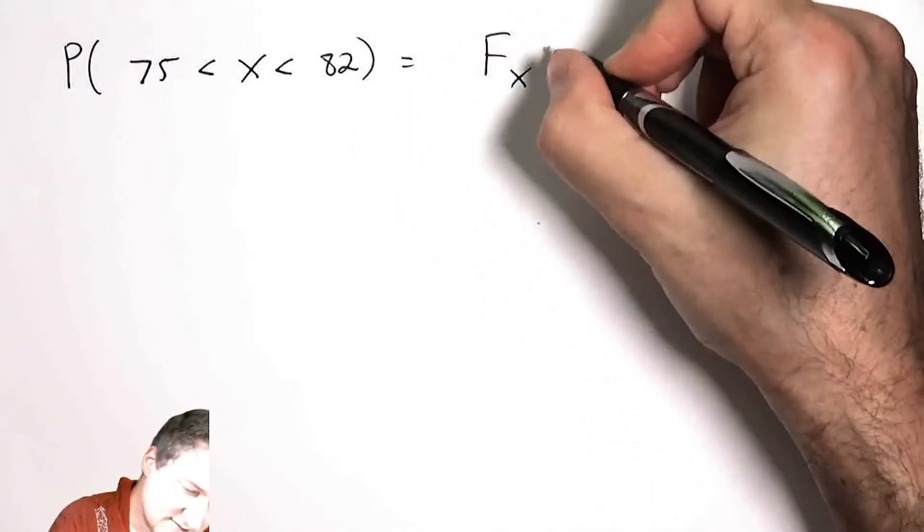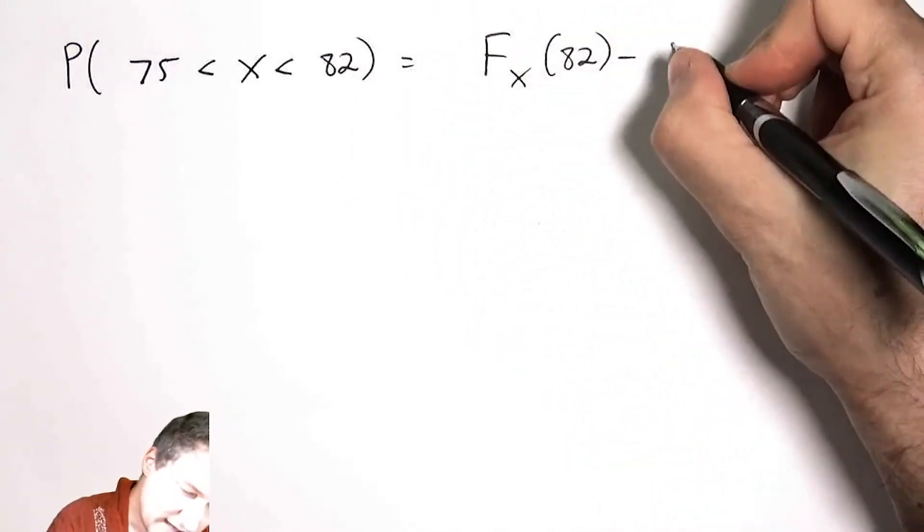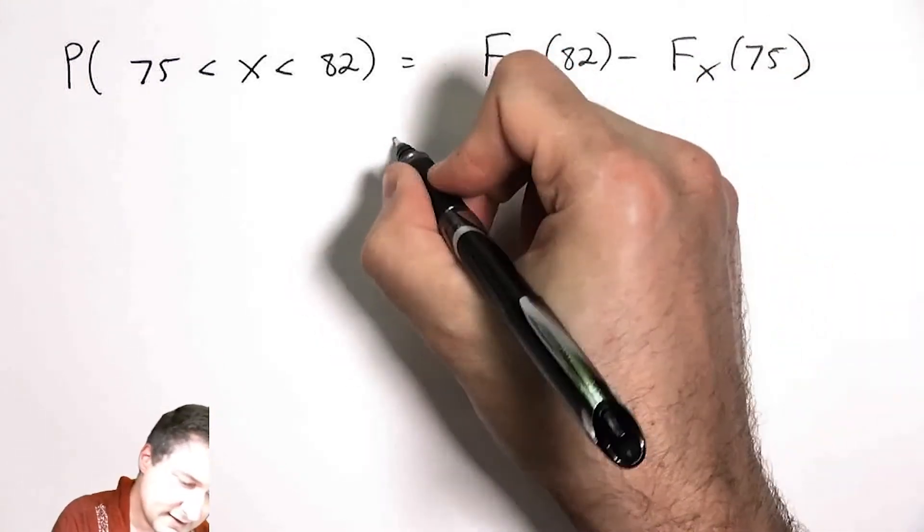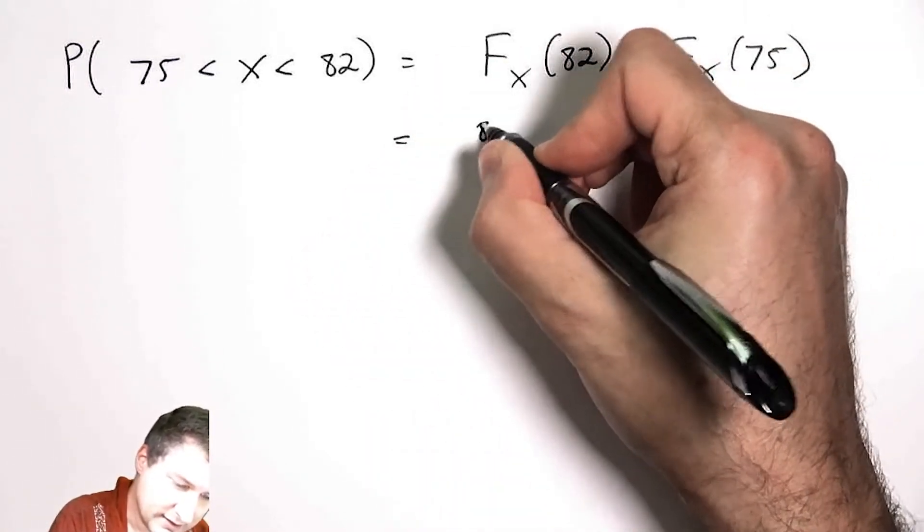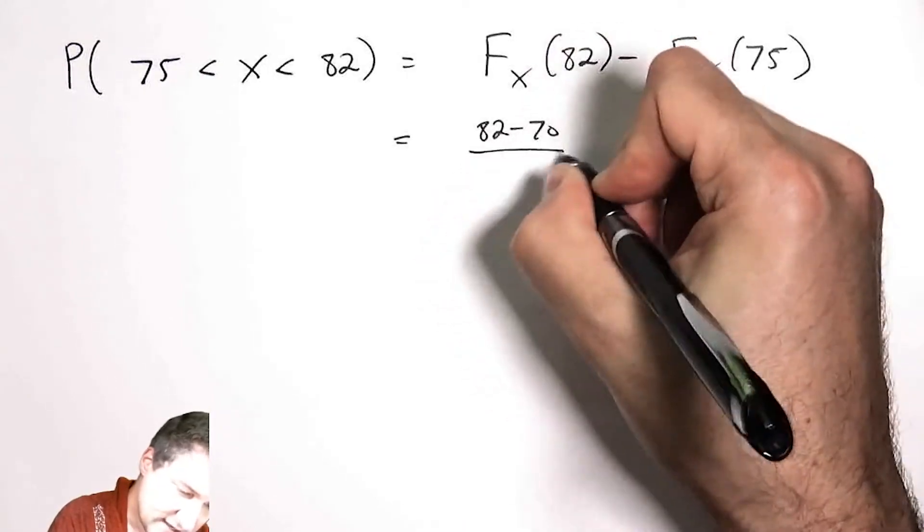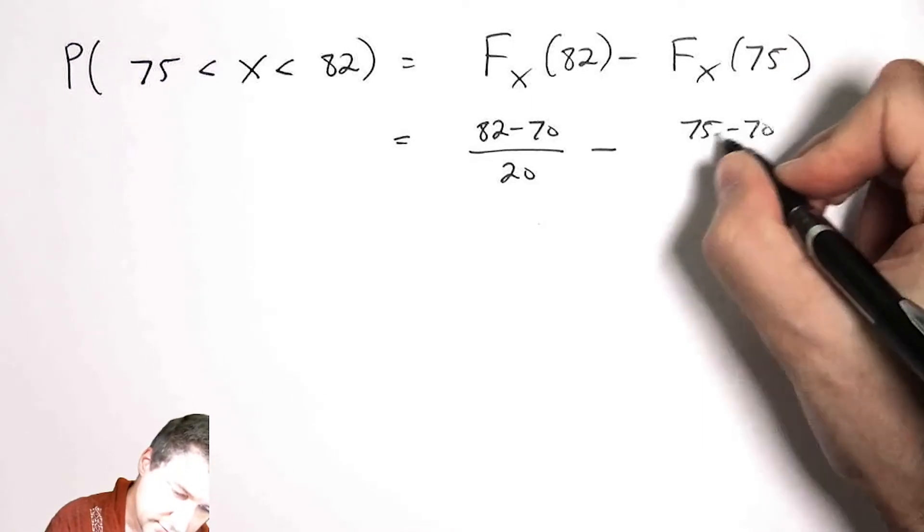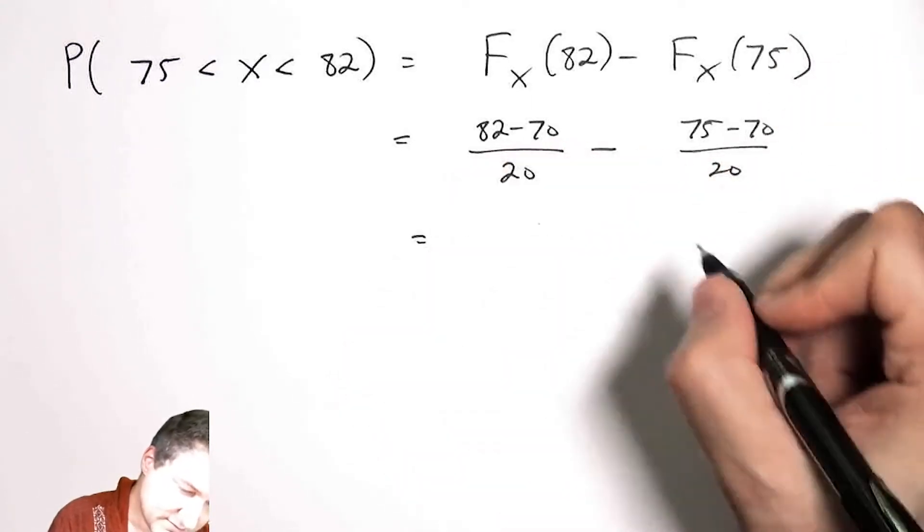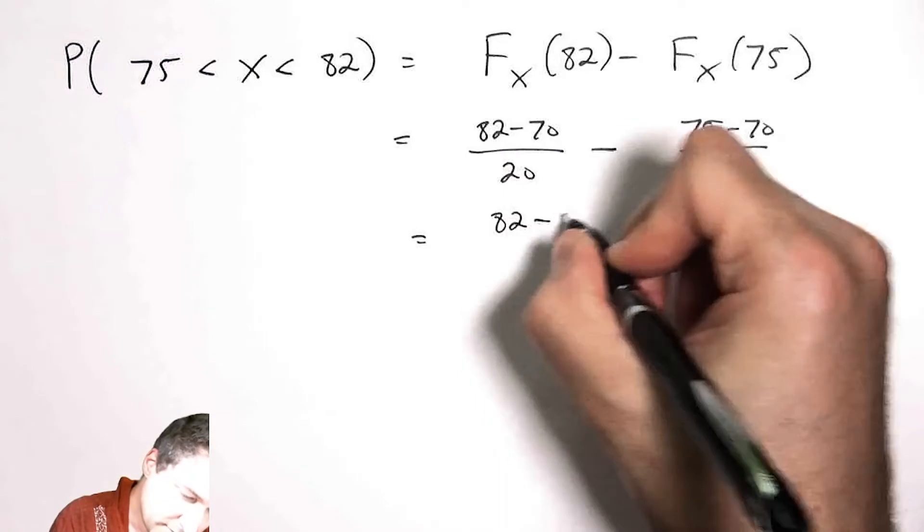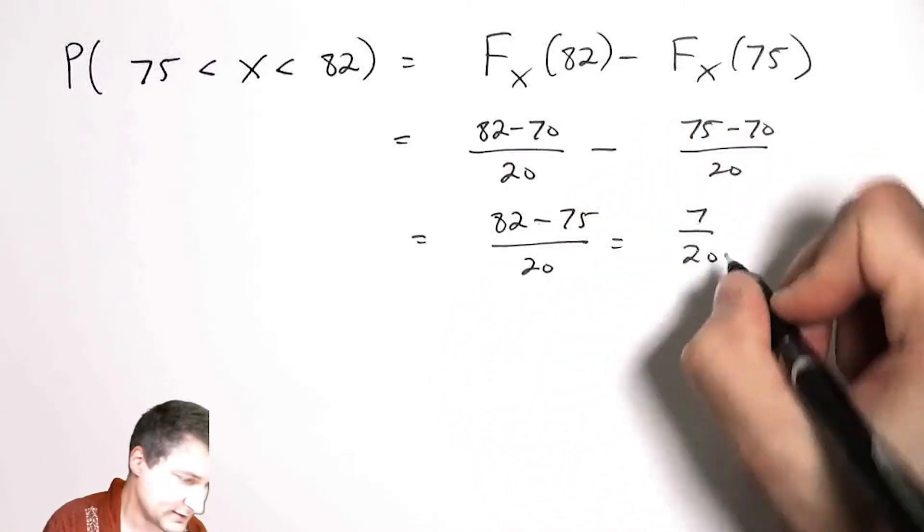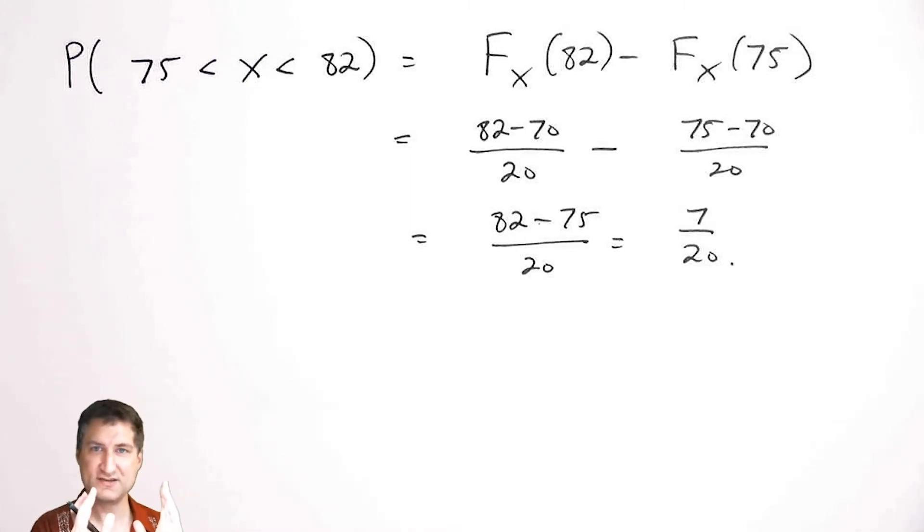Well, I would use the CDF to evaluate at 82 and 75. And I would compute this is 82 minus 70 over 20. This is 75 minus 70 over 20. Simplifying, this is just 82 minus 75 over 20, which is 7 over 20. Which makes sense, because it's basically seven units of this 20 unit long interval. And actually, here I can see...